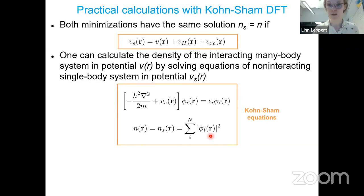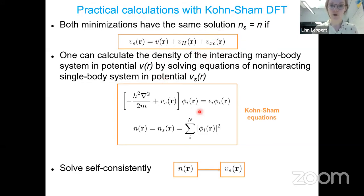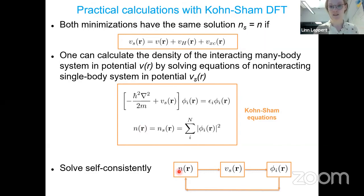This needs to be solved self-consistently: we first make a guess for the density, use it to calculate the Hartree potential and the exchange-correlation potential, then solve the Kohn-Sham equation to get the φᵢ eigenstates, use those to get the density again, and iterate until self-consistency is reached. The problem is that we don't know this exchange-correlation energy — we don't have any functional form for it, and it needs to be approximated. This is basically where a lot of people get very frustrated with DFT.